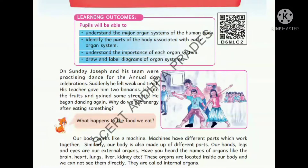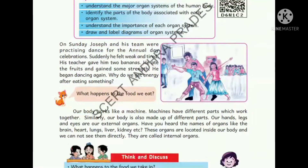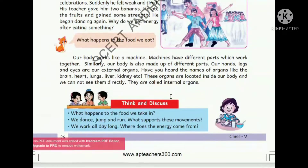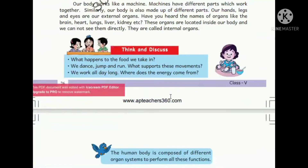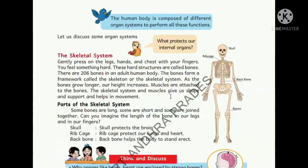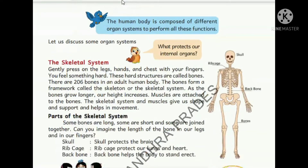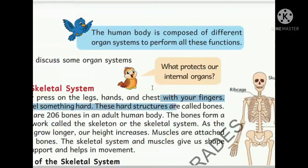Here children are dancing. For dancing, which organs do you use? Yes, hands and legs. For each action, various organ systems or organs help us. Now let us see the first organ system - the skeletal system.